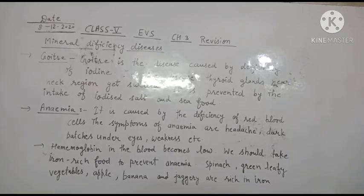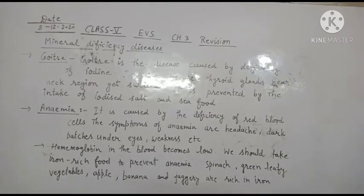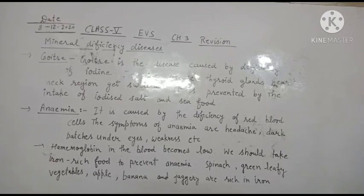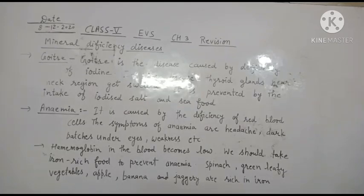First, goiter. Goiter is a disease caused by the deficiency of iodine. Iodine is a mineral, and when it decreases in the body, the thyroid gland in our neck becomes affected.